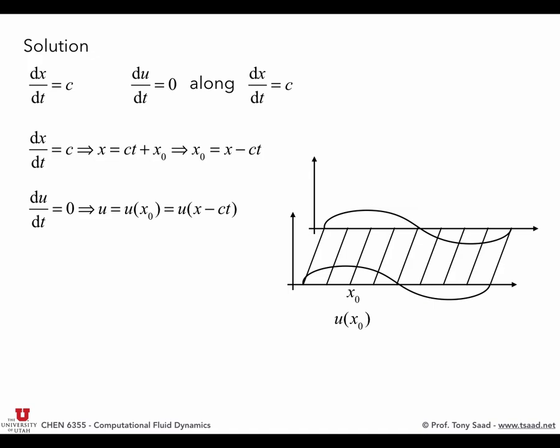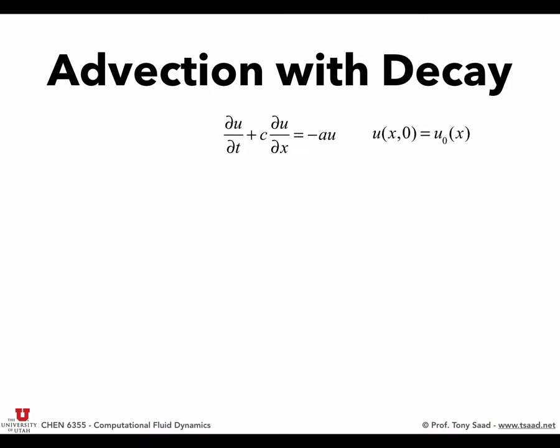Let's take it up a notch: advection with decay. I'll add a source term to the right-hand side of the advection equation given by minus a·u, where a is a positive constant. The initial condition is given by u₀(x).